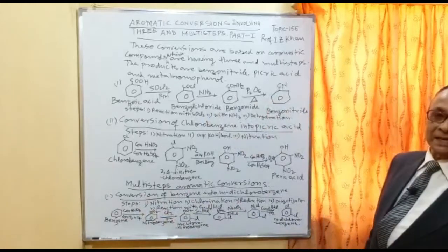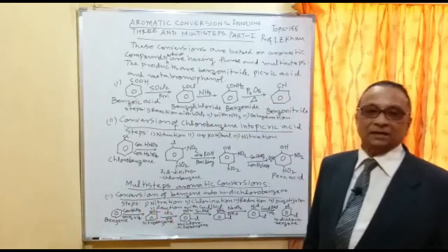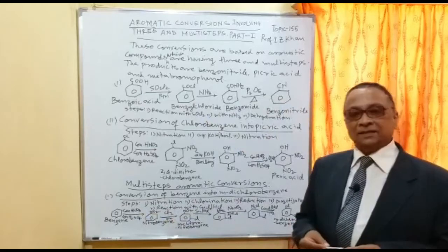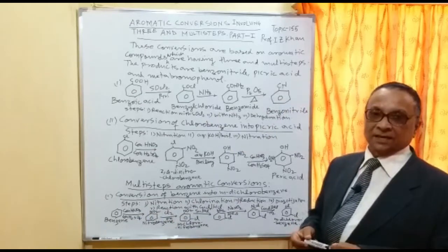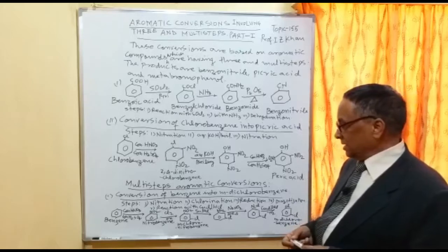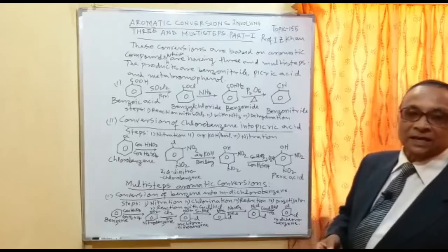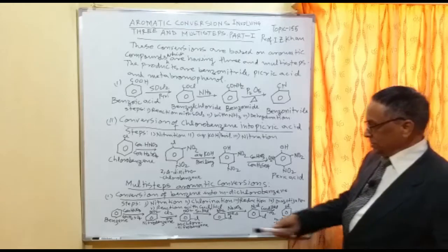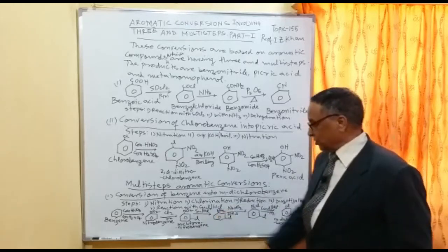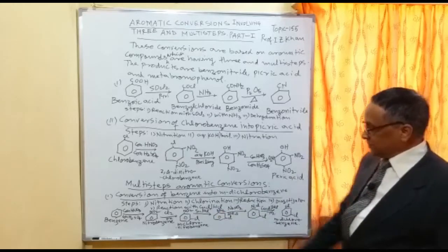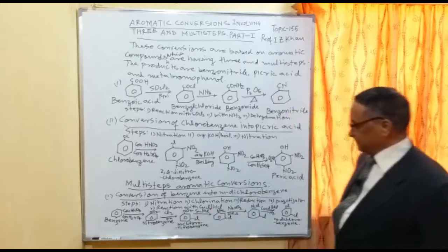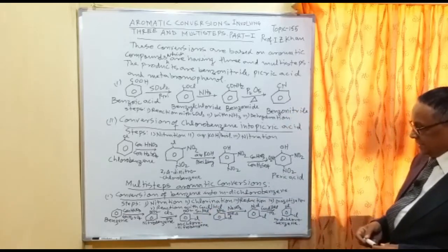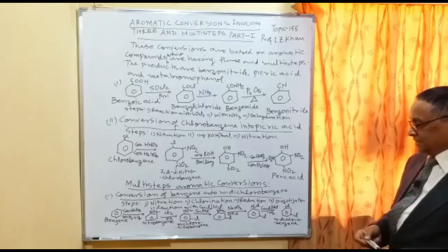First, benzene is nitrated in the presence of nitrating mixture — concentrated sulfuric acid and concentrated nitric acid — to give nitrobenzene. This nitrobenzene is then chlorinated in the presence of chlorine to give meta-chloronitrobenzene, because chlorine attaches at the meta position.